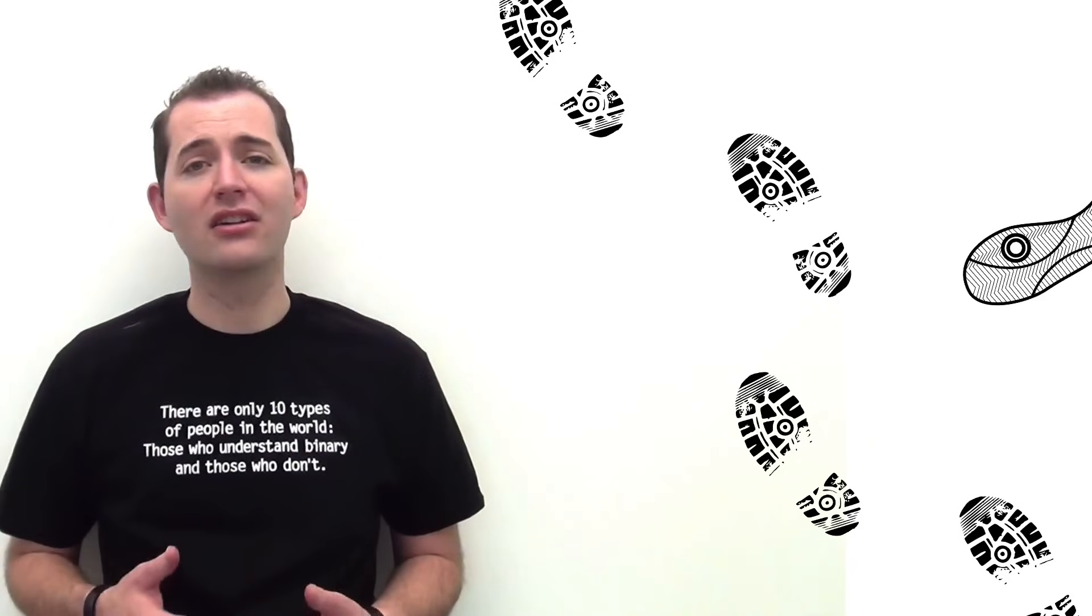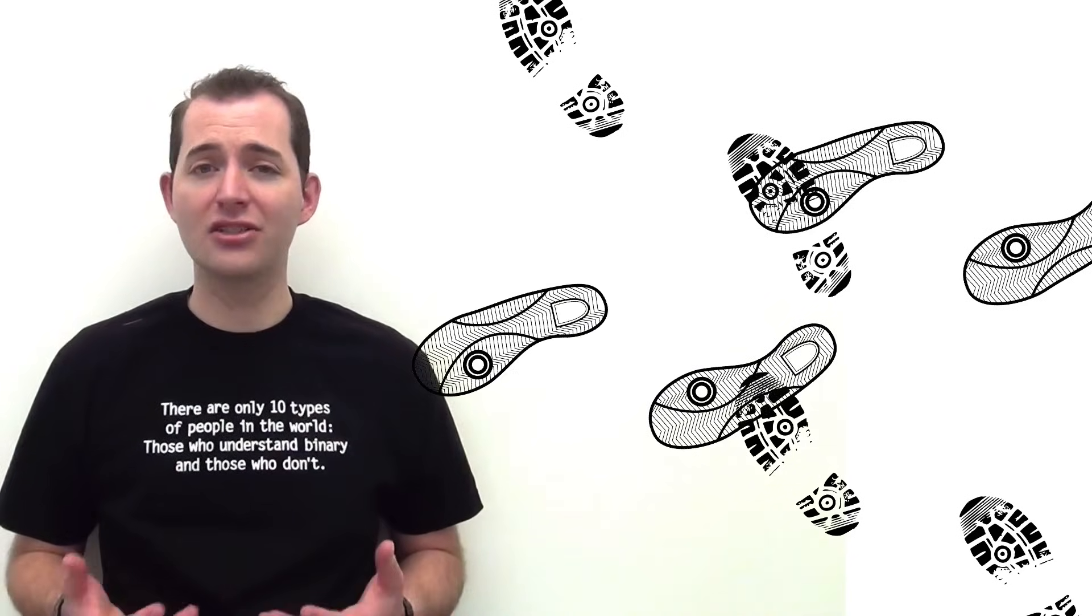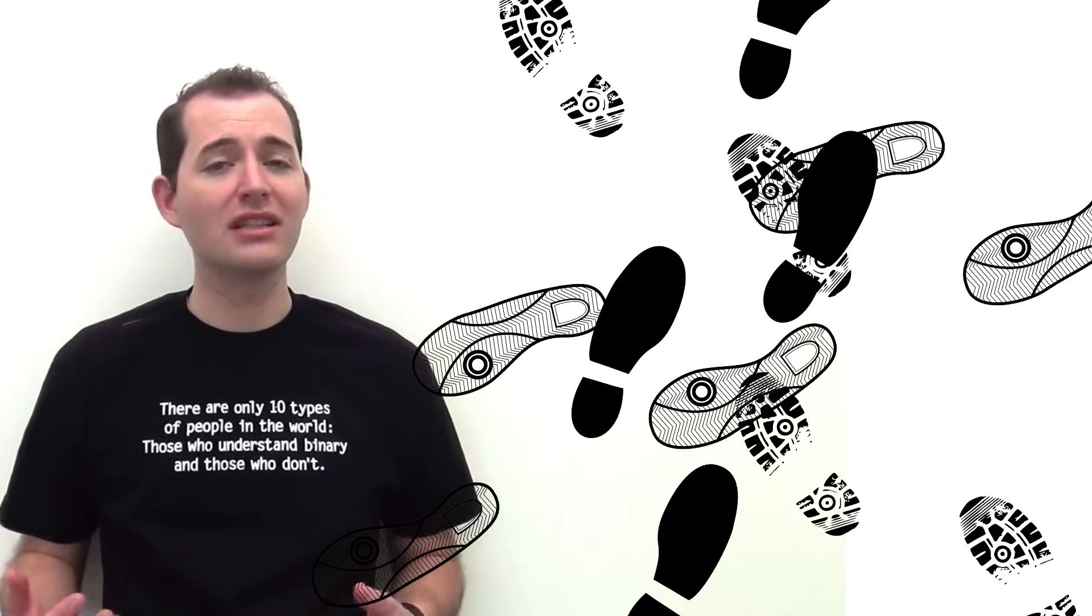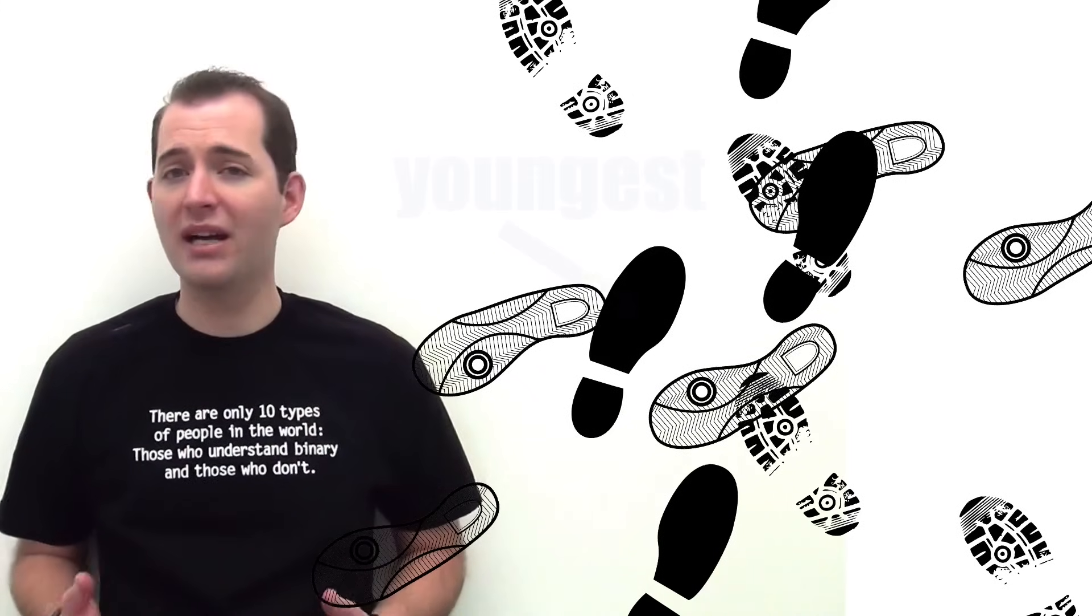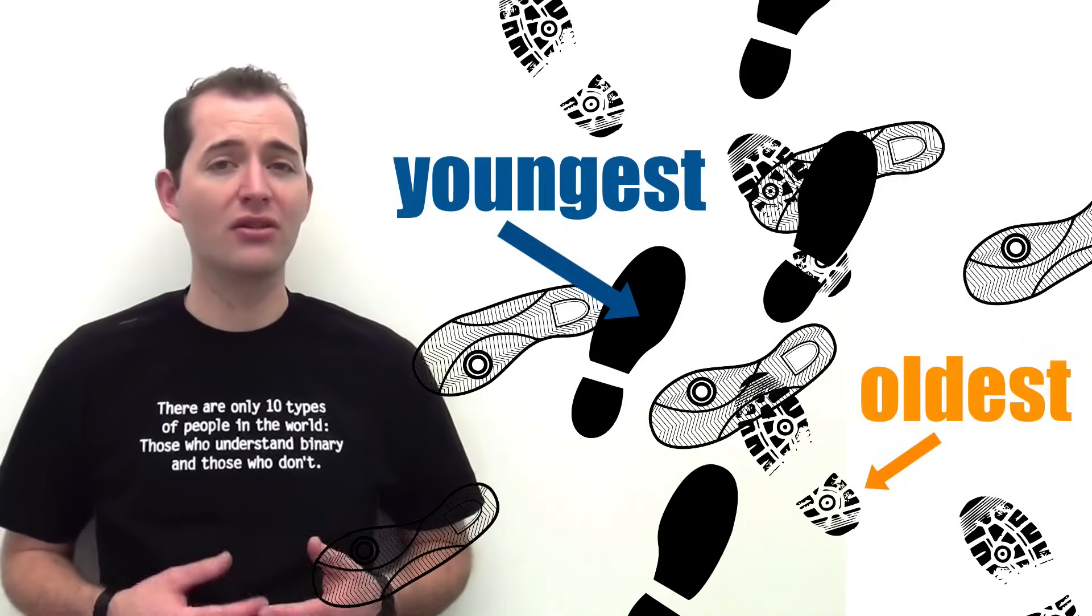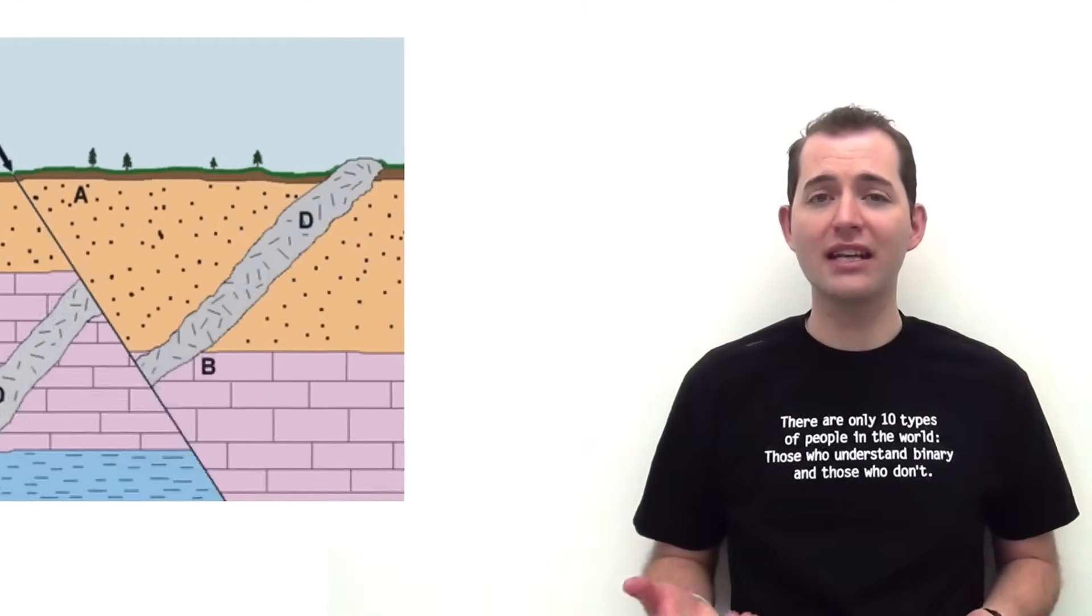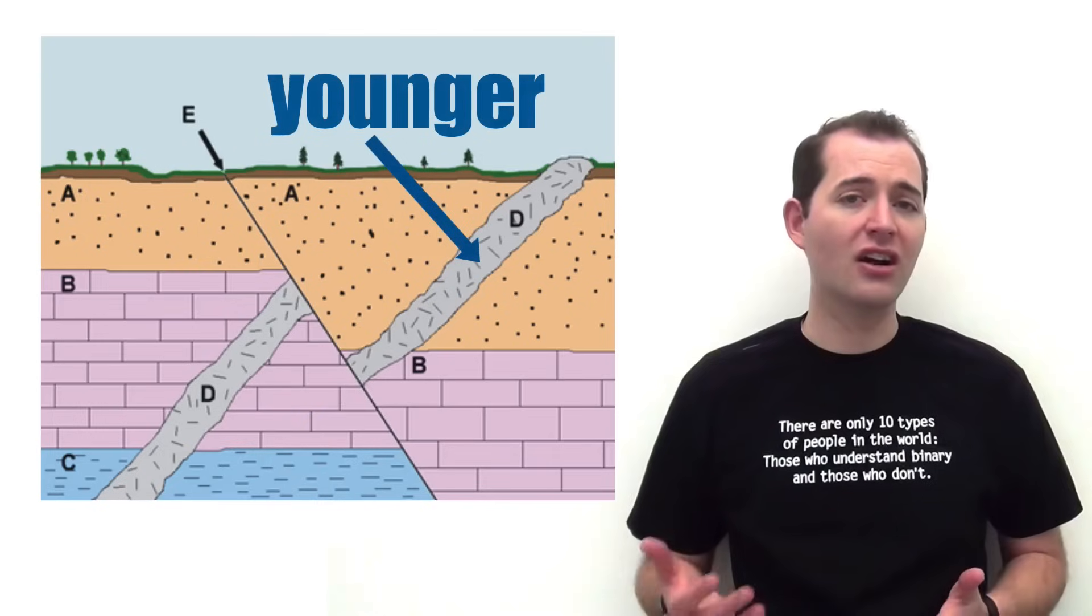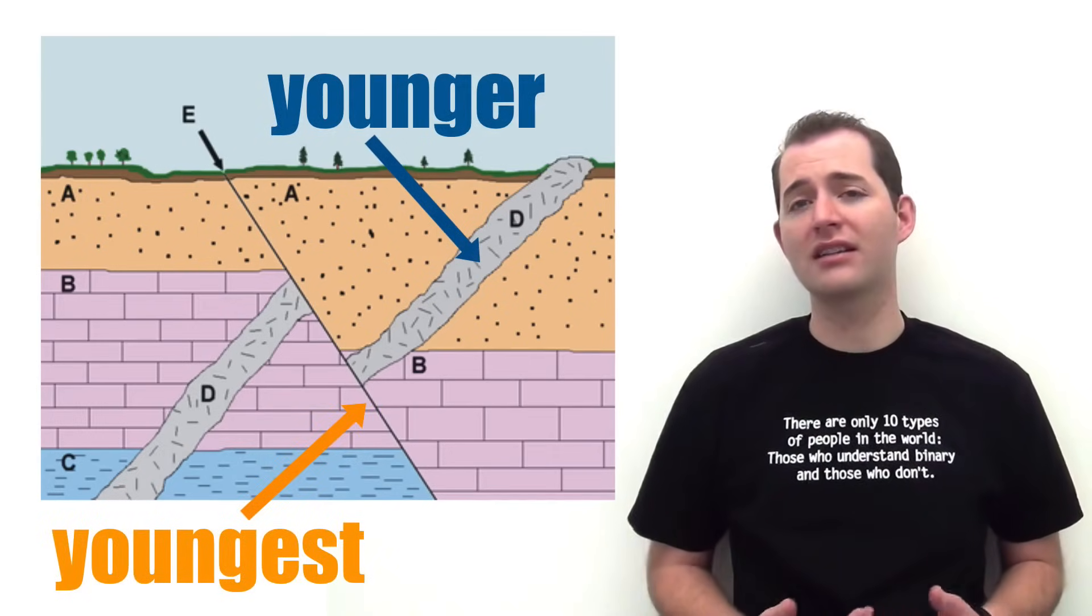Let's compare the law of crosscutting to tracks in snow or in sand. In this scenario, the older tracks will be covered by younger tracks. This allows us to determine the relative age of those tracks, where those that are on top or are not covered by anything are the youngest and those that are covered by the most are the oldest. This is also true with any rock sequence with crosscutting features. Those features are younger than all of the rocks they cut.